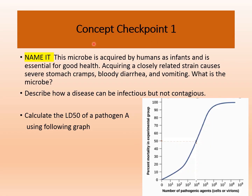It's time for our first concept checkpoint. Using the information from this lecture, try to solve these three questions. First, identify a microbe which is a normal flora in infants but can also cause stomach cramps, bloody diarrhea, and vomiting in adults. Second, describe how a disease can be infectious but not contagious. Third, using the graph provided, identify the LD50 of the pathogen. Please go through the lecture and try to solve them. We will discuss the answers in our interactive section.